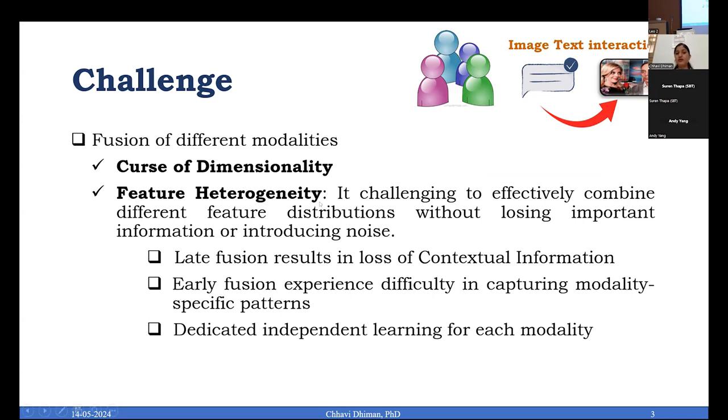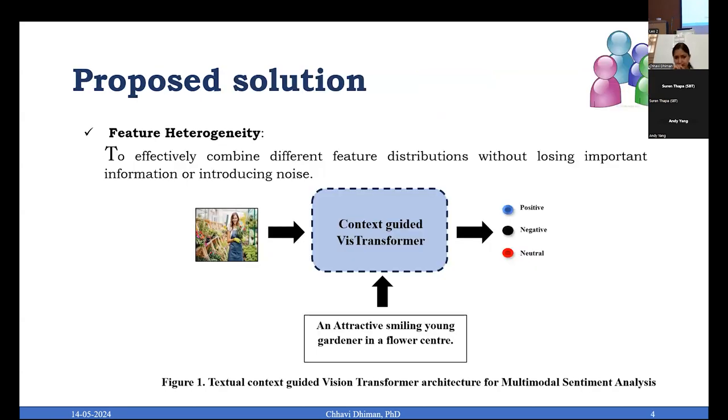Another challenge is feature heterogeneity. When you are combining different features, different feature distributions, you ensure that combination does not lead to losing important information or that noisy elements may be highlighted when fusing them. We have multiple methods that have gone for late fusion, early fusion, and they also demand dedicated independent learning of each modality, making the model even more extensive and computationally demanding.